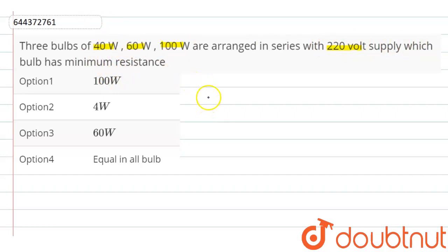that power is equals to V² by R, where V is voltage and R is resistance. So from here...